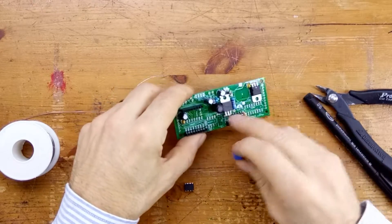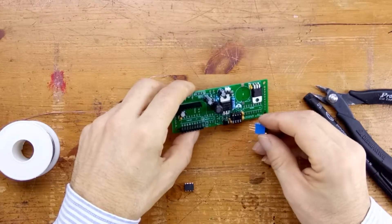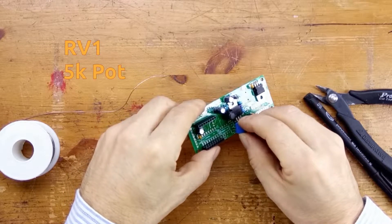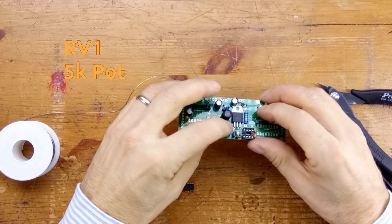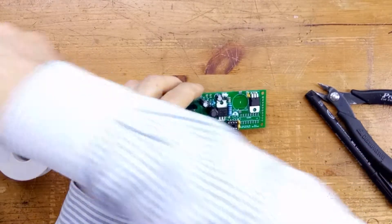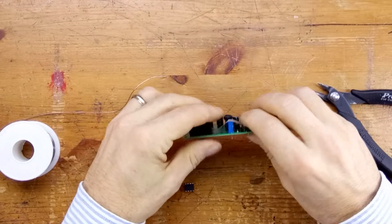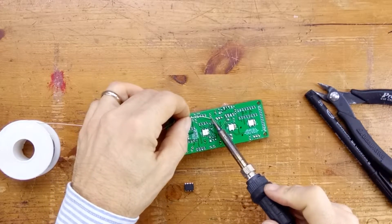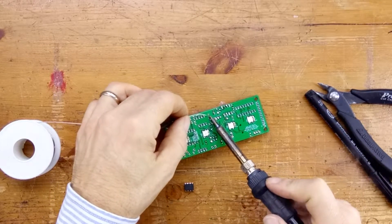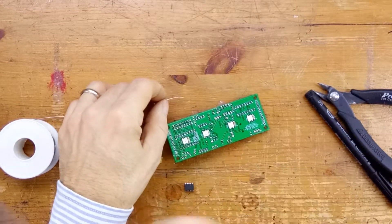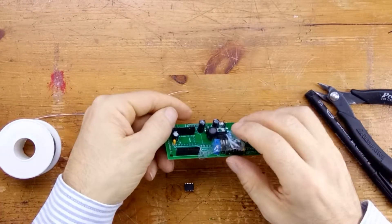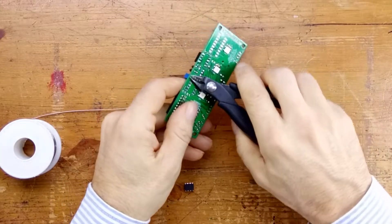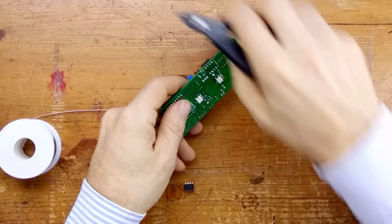Now we're going to put in RV1, which is the 5K Bourns type potentiometer. I've put it so that the screw is near the outside of the board. It doesn't matter. You can put it either way around. Solder the connections, and we're good. Trim up the excess off the leads and get rid of them.